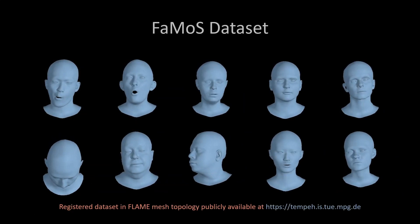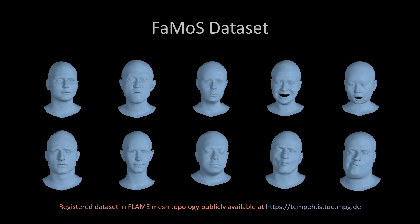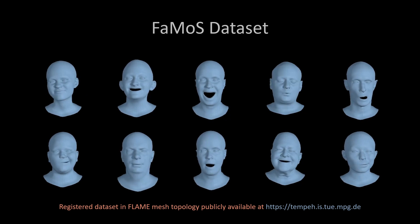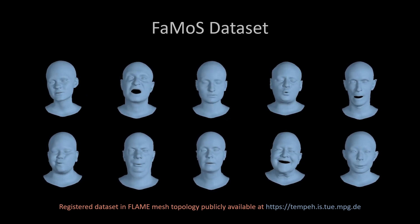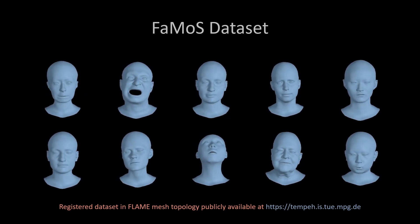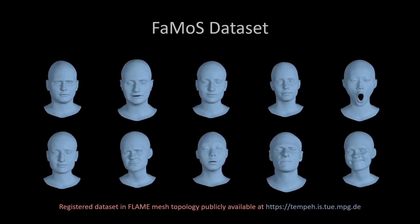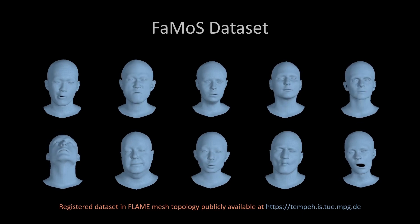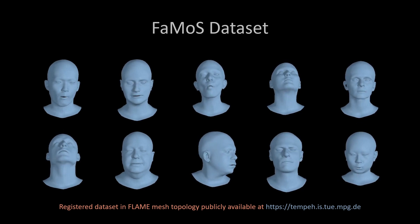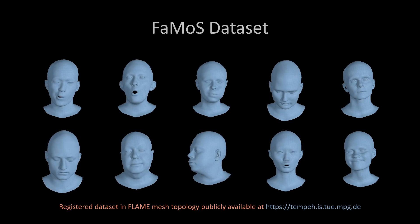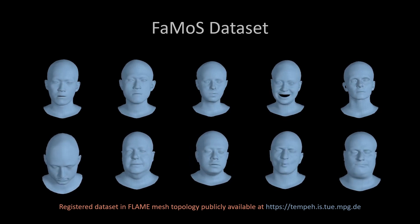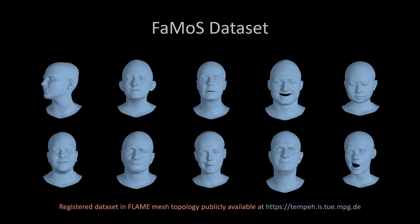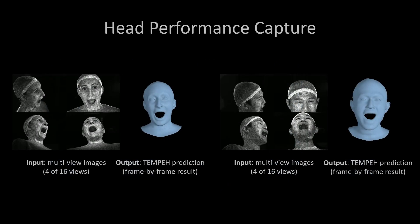To train and evaluate TEMPER, we collect a multi-view 3D head dataset named FAMOUS from 95 subjects. Each subject performs 28 motion sequences containing 6 prototypical expressions, 2 head rotations, and diverse facial motions, including extreme and asymmetric expressions. In total, FAMOUS consists of about 600,000 frames. Registered meshes in FLAME mesh topology for the entire dataset are publicly available.